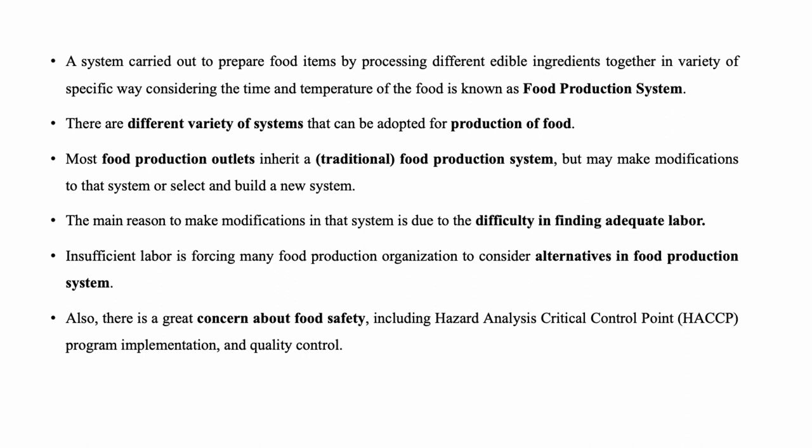There are different varieties of systems that can be adopted for the production of food. Most food production outlets inherit a traditional food production system but may make modifications to that system or select and build a new system. The main reason to make modifications is due to the difficulty in finding adequate labor. Insufficient labor is forcing many food production organizations to consider alternatives in food production systems.